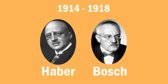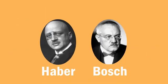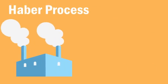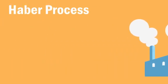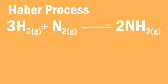For their efforts and contributions to developing large-scale industrial processes, they were awarded with Nobel Prizes in Chemistry. The Haber process is the industrial process for the manufacture of ammonia from hydrogen and nitrogen.